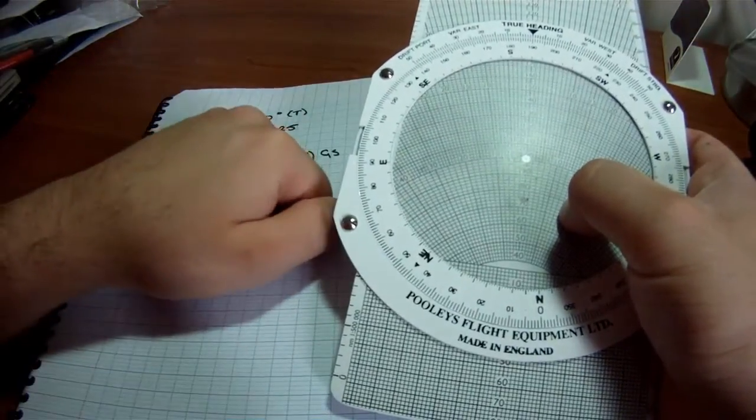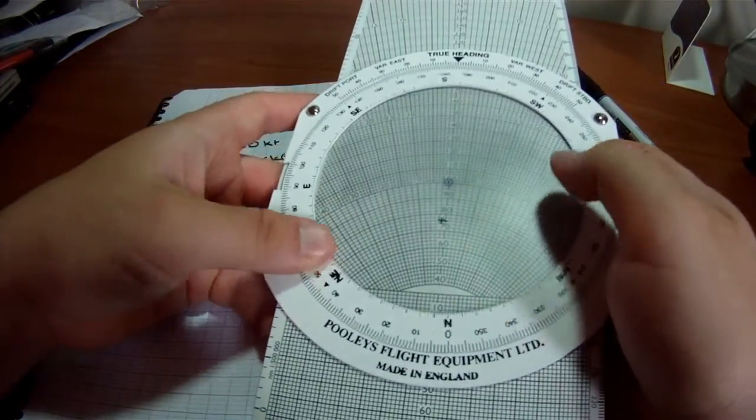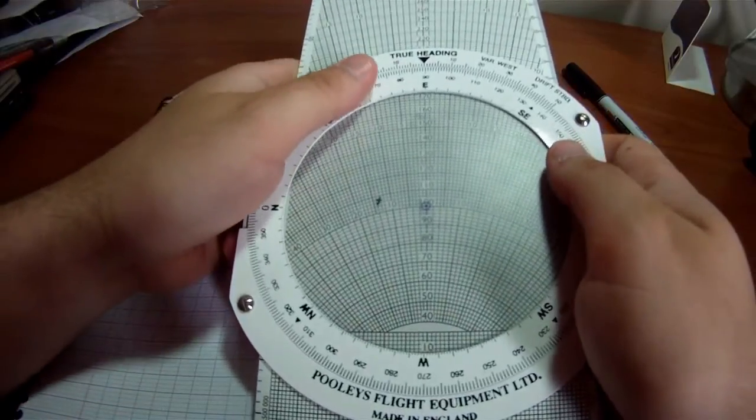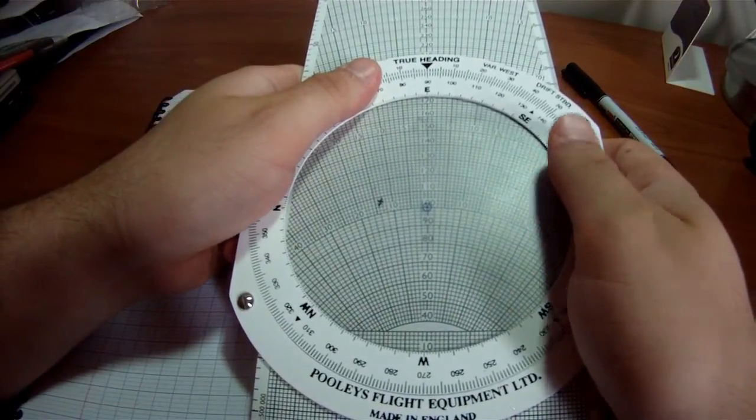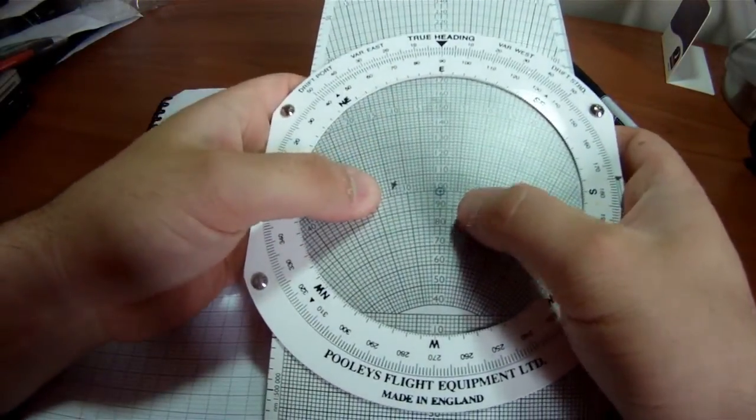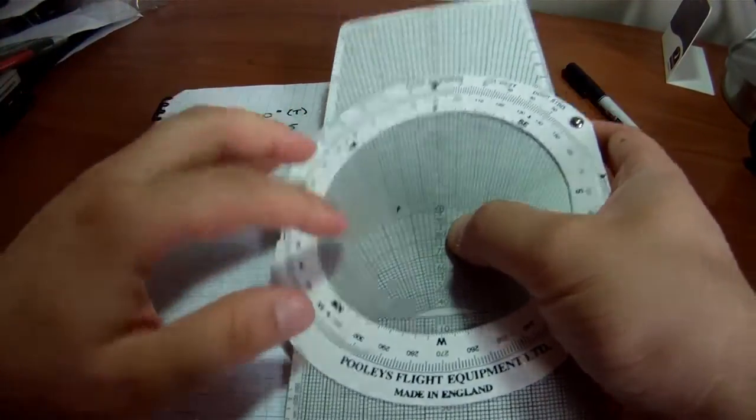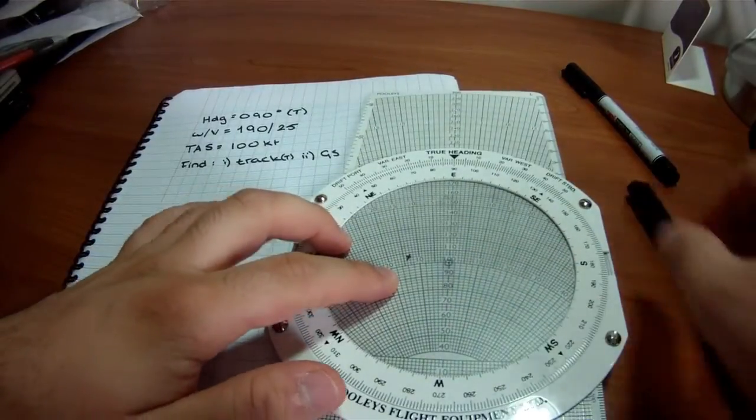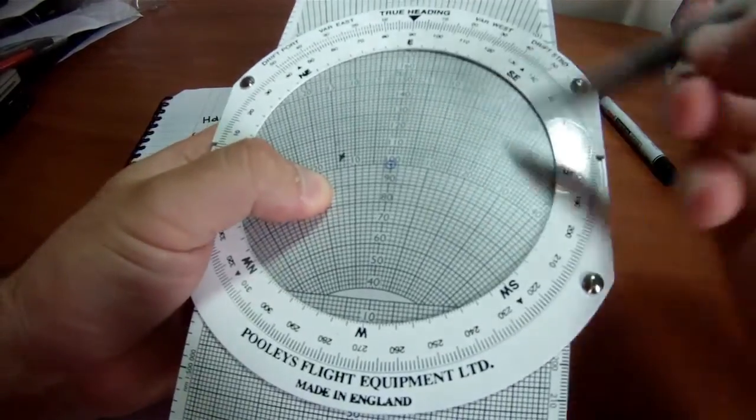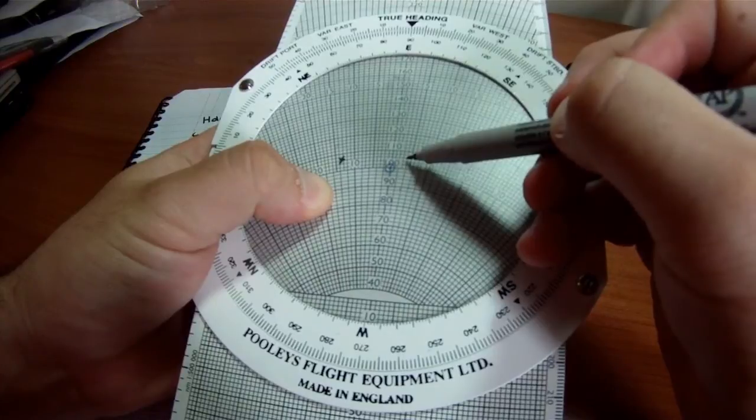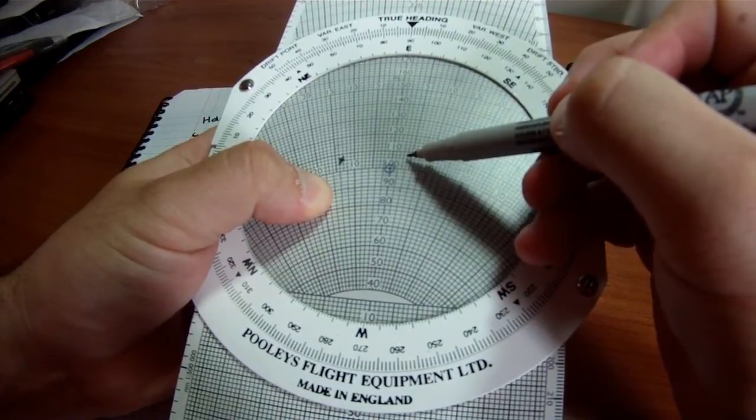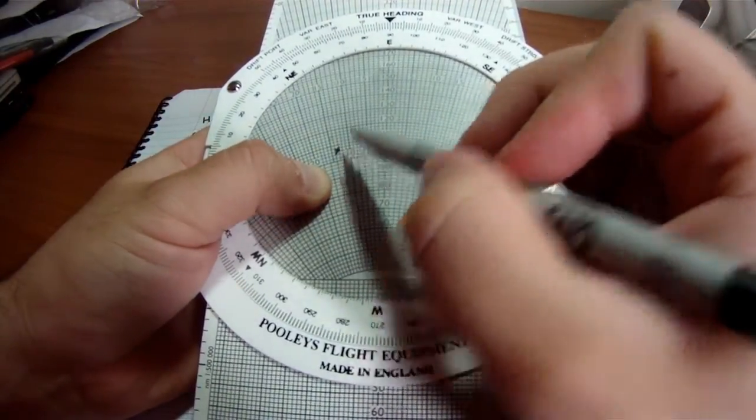And we're going to spin it to a heading of 090 degrees. Spin, spin, spin. Bam. Okay. First thing, we already have our ground speed. Seriously, we already have our ground speed. Our ground speed is whatever the dot says, which is 102, 104, 106, about 107 knots if you look there. 107 knots.